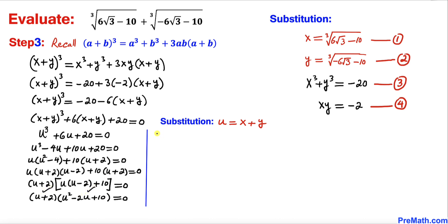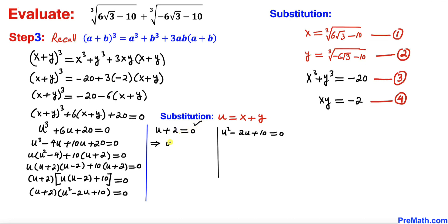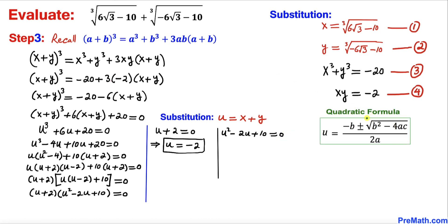Setting each factor to zero: the first factor gives u + 2 = 0, so u = −2. The second factor gives the quadratic u² − 2u + 10 = 0. We investigate this using the quadratic formula, focusing on the discriminant b² − 4ac, where a = 1, b = −2, and c = 10.